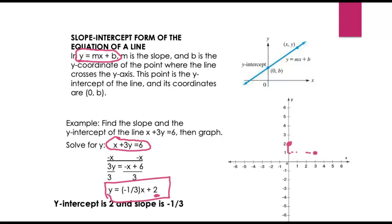Or we could go down 1 again and over 3, and draw our line through these two points. So our line is going to look something like this. That's what the graph of the line is going to look like.